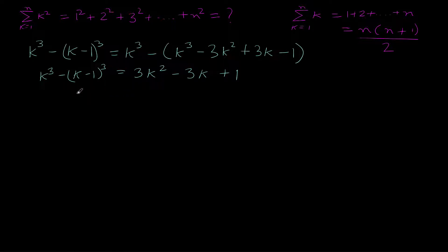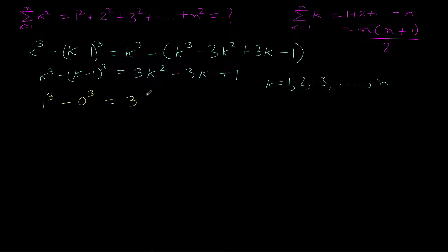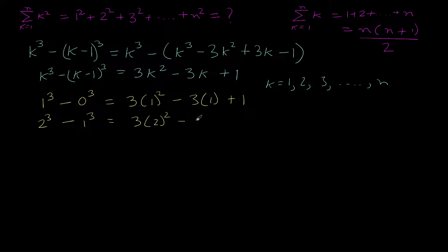Now we just start putting values for k from 1, 2, 3 and so on up to n into this expression. For k=1: 1³ − 0³ = 3(1²) − 3(1) + 1. For k=2: 2³ − 1³ = 3(2²) − 3(2) + 1. You would start to get a feel of why we did this, since we are getting 1² and 2² — so if we keep on adding these terms we will get 1² + 2² + 3².